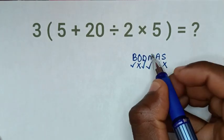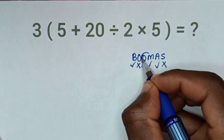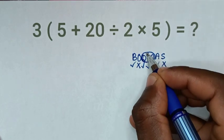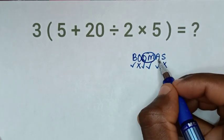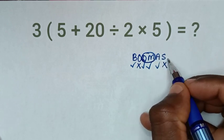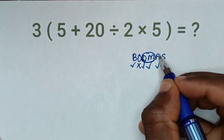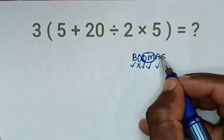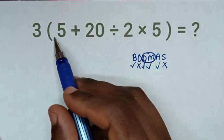But from the rule we start with division and multiplication first. Then addition and subtraction but we don't have subtraction. So lastly we'll deal with addition operation inside this bracket.